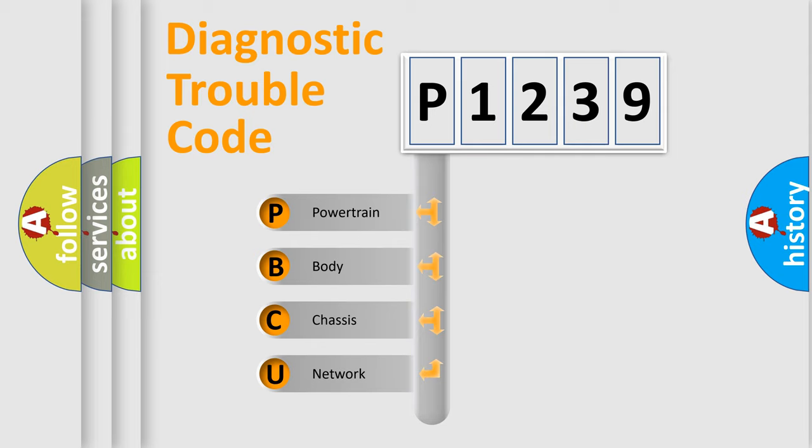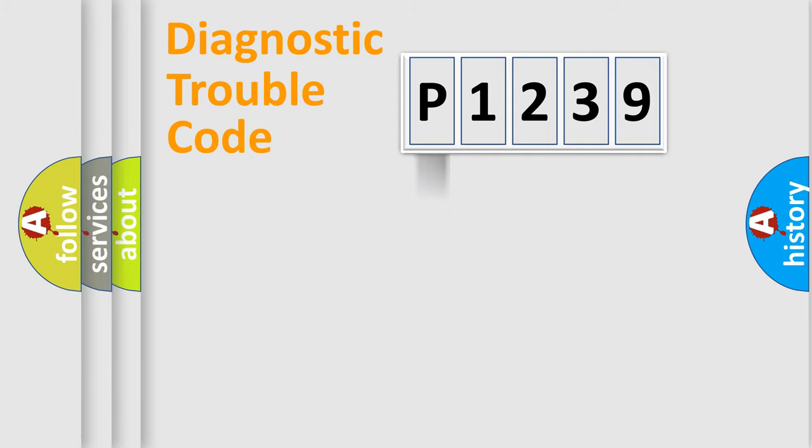We divide the electric system of automobile into four basic units: powertrain, body, chassis, and network. This distribution is defined in the first character code.